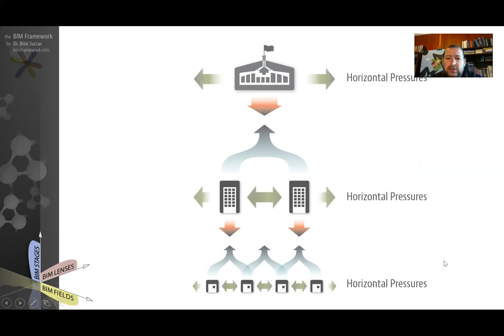A third mechanism is the horizontal pressure, which is referred to as the mimetic pressure or imitation. This is where different sized players, whether they are governments, large organizations, or small organizations, imitate each other. When one player adopts a certain innovative or productive efficient system or process, other players within the same group also see the value and imitate them.